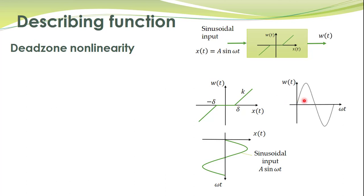The input sinusoid is sketched here, and this is the output of the non-linearity. For values of input less than delta — that is, up to a certain time instant — there is no output of the non-linearity. After that time instant there is a proportional increase in the output, proportional to the input.